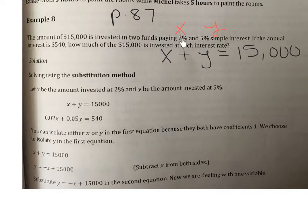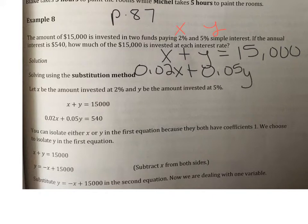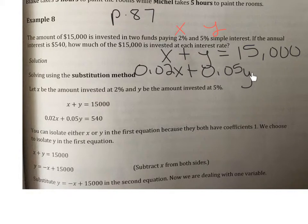The second equation involves interest. Multiplying the decimal interest rate by the amount invested gives the interest earned. So: 0.02 times X plus 0.05 times Y equals 540. The premise is that the percent rate as a decimal, times how much you invest, equals the interest earned. That gives us our two equations: X plus Y equals 15,000 and 0.02X plus 0.05Y equals 540.